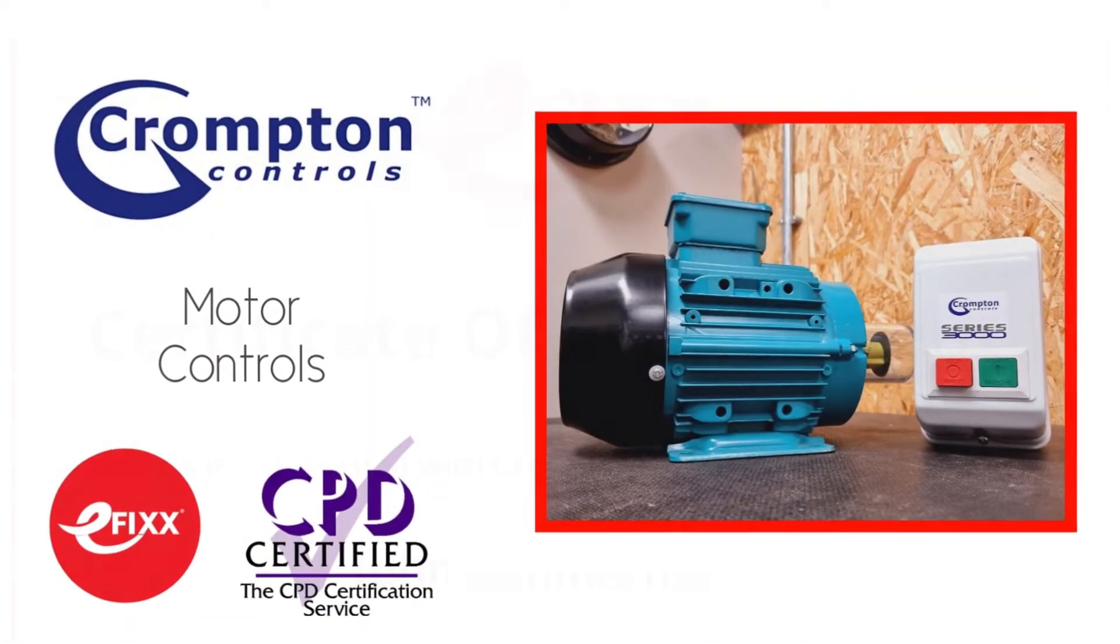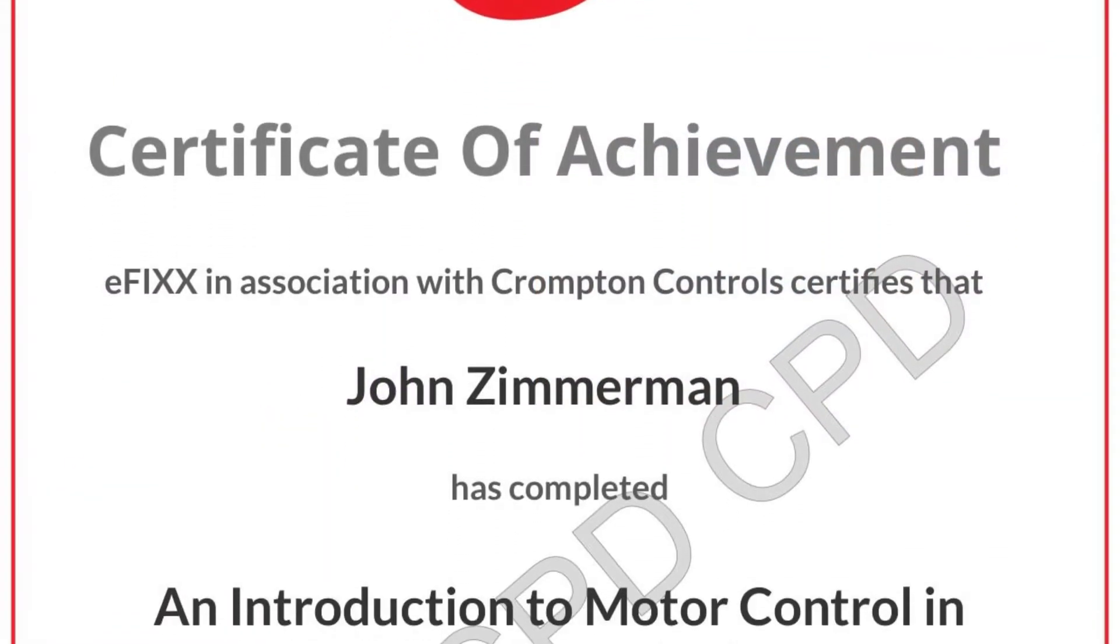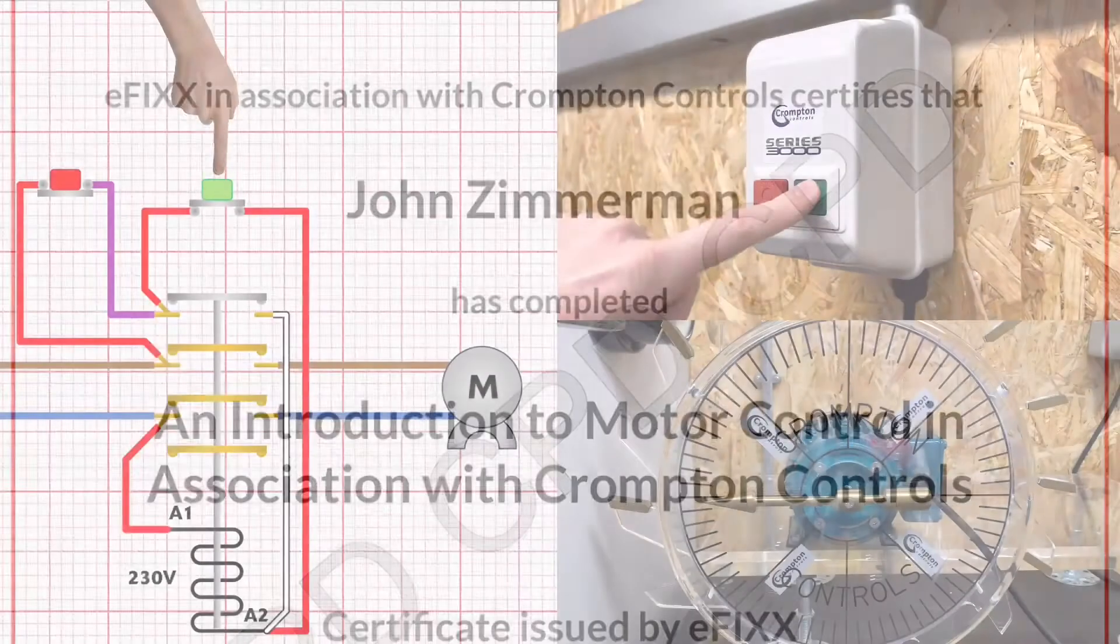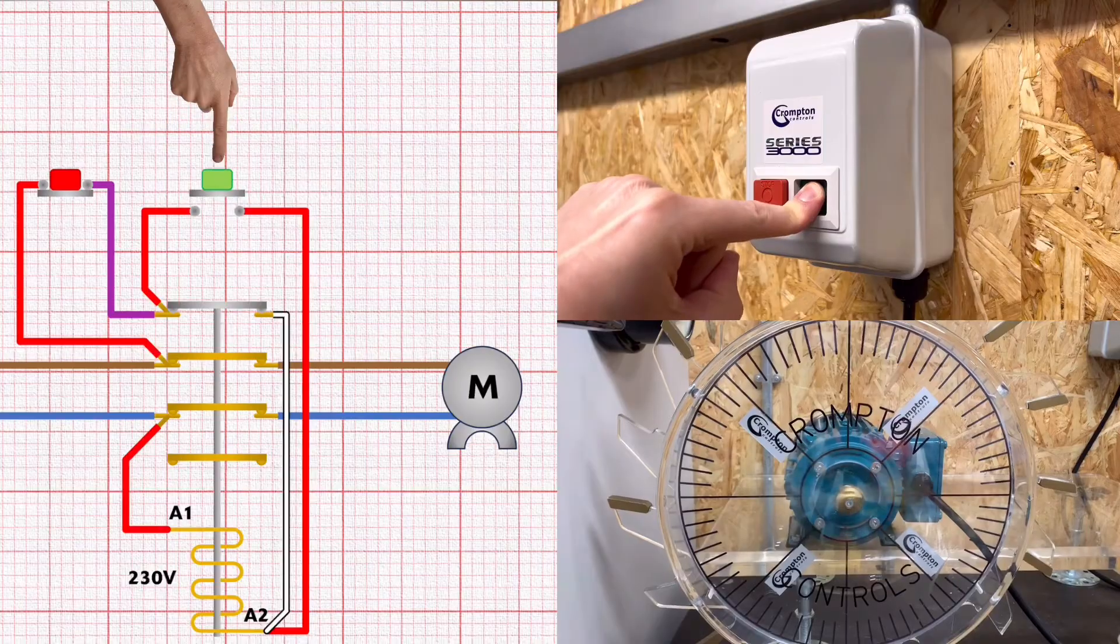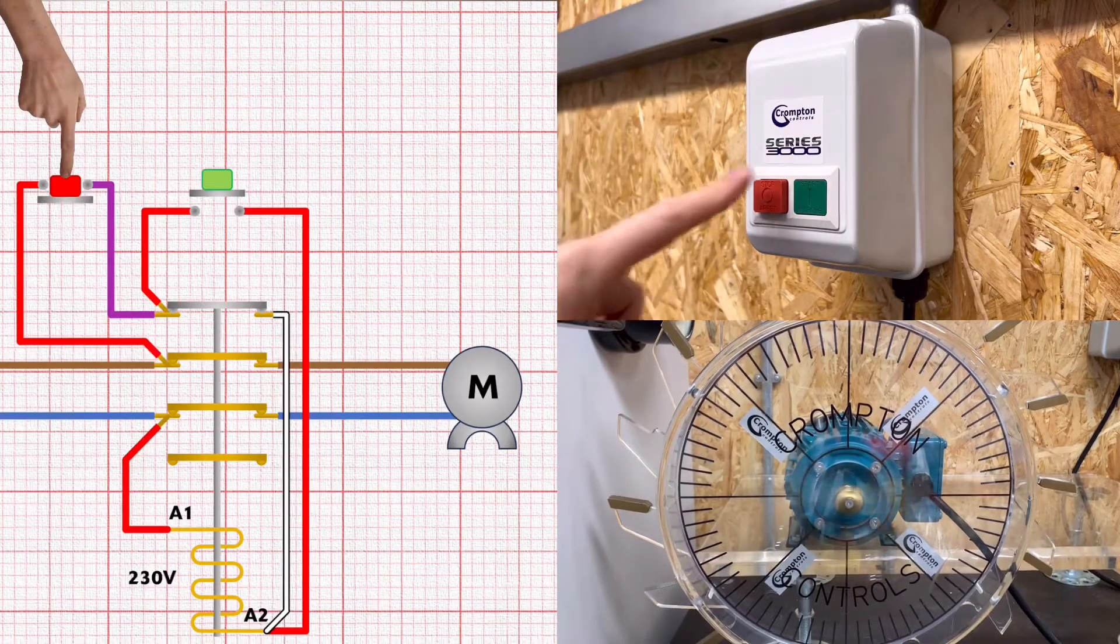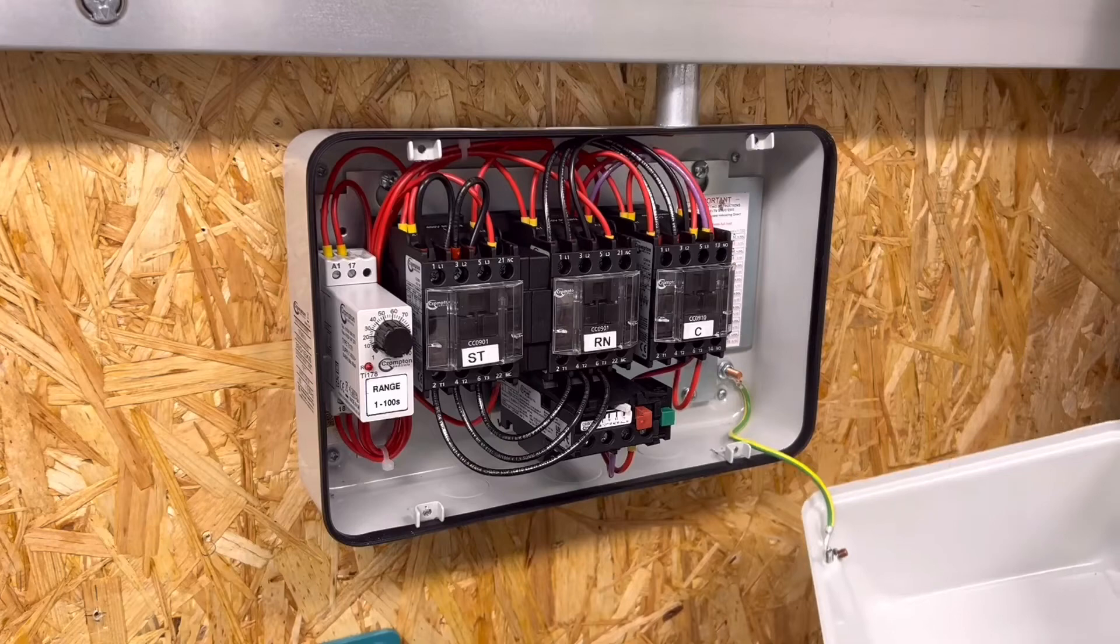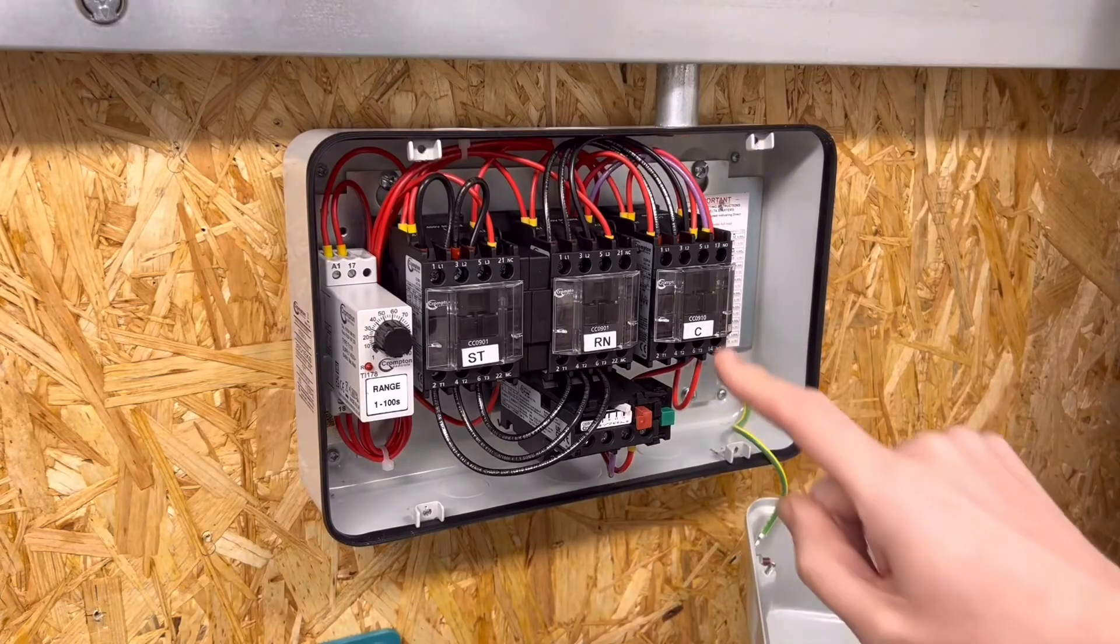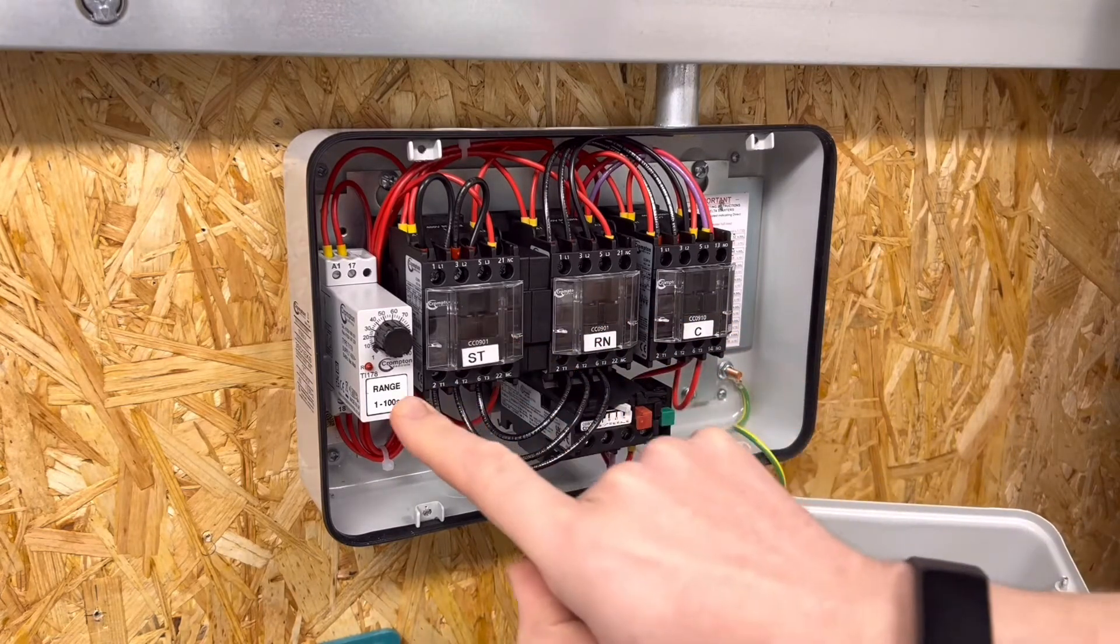To help you with your CPD, you'll receive a certificate to prove you completed the course. In previous videos we looked at systems that control the stopping and starting of motors in the form of direct online and star delta starters. These devices are used to turn motors on and off but don't allow for controlling the speed of the motors.